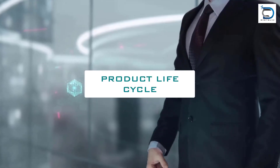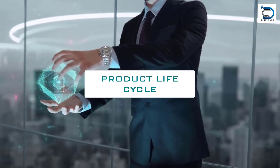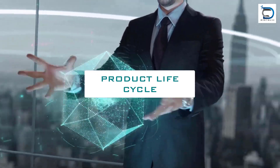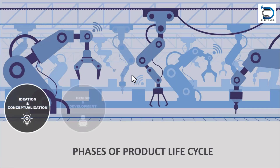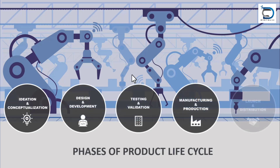Every product goes through a life cycle called the product life cycle, which consists of the following stages: ideation and conceptualization, design and development, testing and validation, and manufacturing and production.